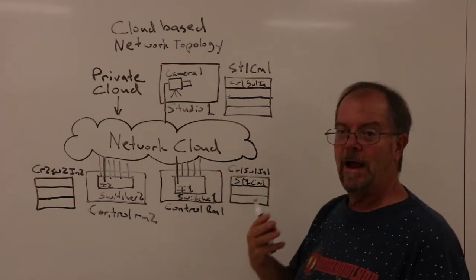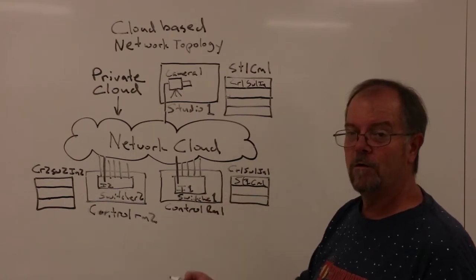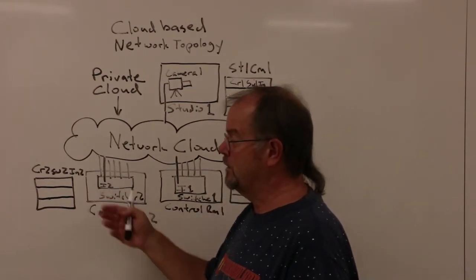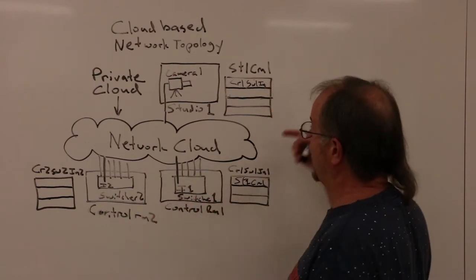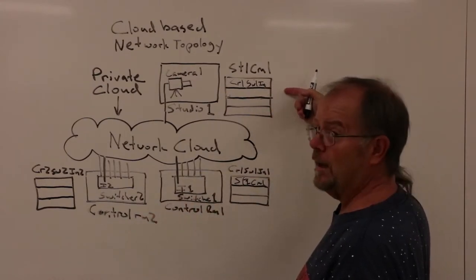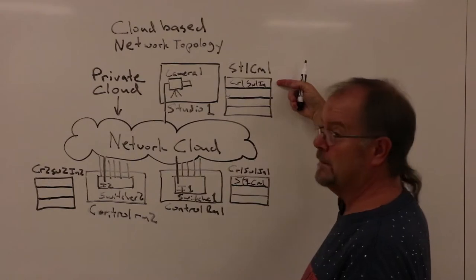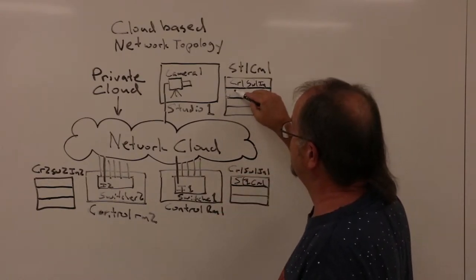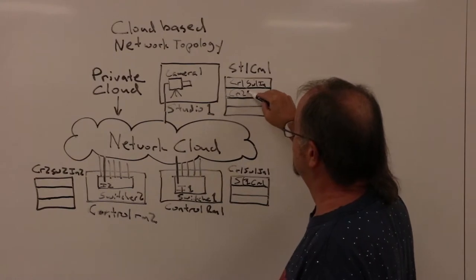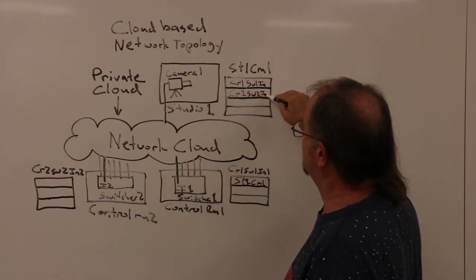Now if I want to add camera 1 to control room 2, the switcher in control room 2, it's very easy. The first thing I do is make a routing table entry in the studio camera saying that in addition to sending your signal to studio 1, we're also going to send it to control room 2, switcher 2, input 2.